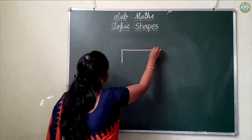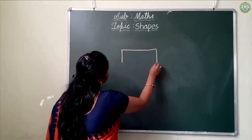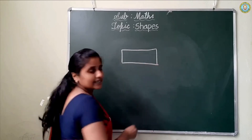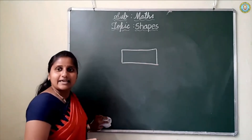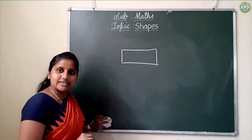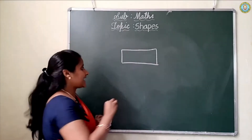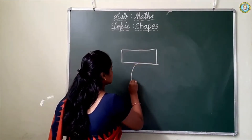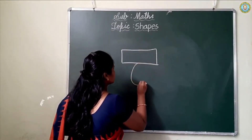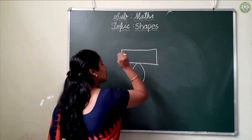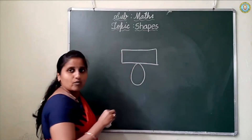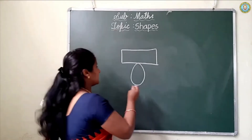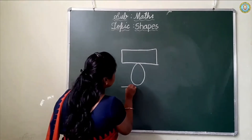What shape is this, children? Rectangle. Which shape is this? Rectangle. Next — oval. Which shape is this? Oval.